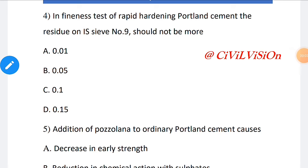Fourth one: In fineness test of rapid hardening Portland cement, the residue on IS sieve number 9 should not be more than? In the previous video we saw about the fineness test apparatus, nothing but air permeability apparatus. The question here is the residue on IS sieve should not be more than. The correct answer for this question is 5 percentage, option B: 0.05.